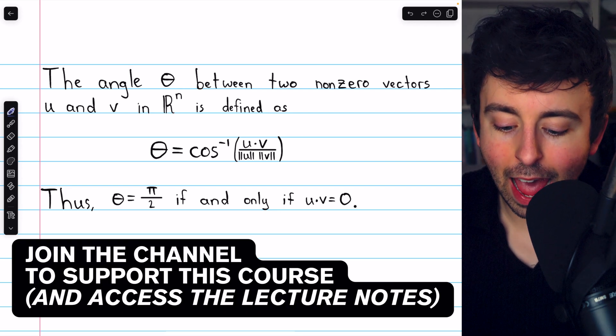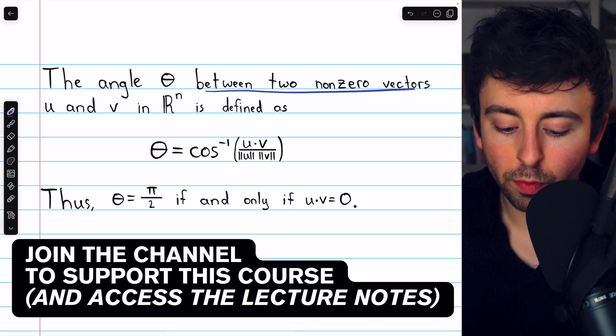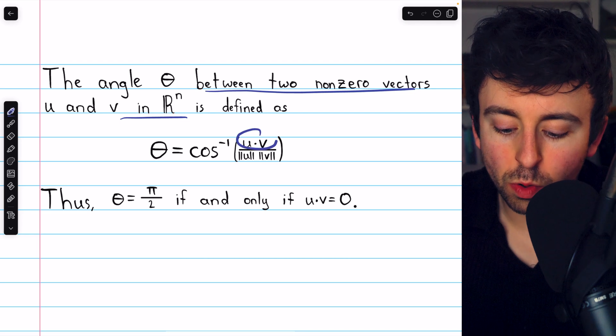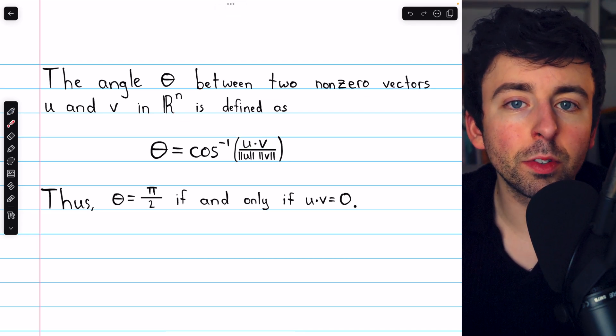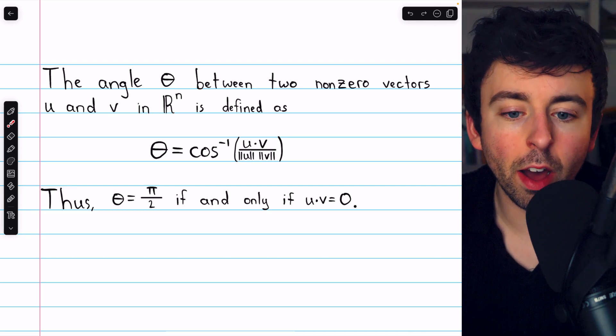Now that we've seen how to define the angle between two non-zero vectors in Rn using the dot product, we can consider what it means for two vectors in Rn to be orthogonal.